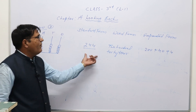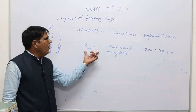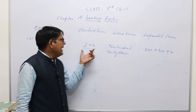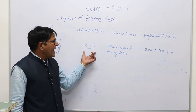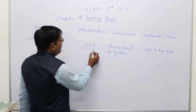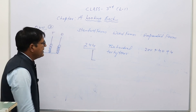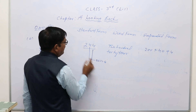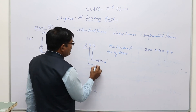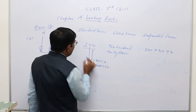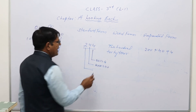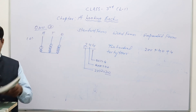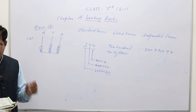So when the abacus form is given, first observe the beads to write the standard form — here it is 244. Then write the word form: two hundred forty-four. Then write the expanded form by finding the place value of each digit: 4 × 1 = 4, 4 × 10 = 40, 2 × 100 = 200, giving 200 + 40 + 4.